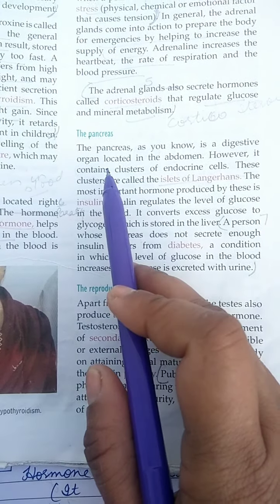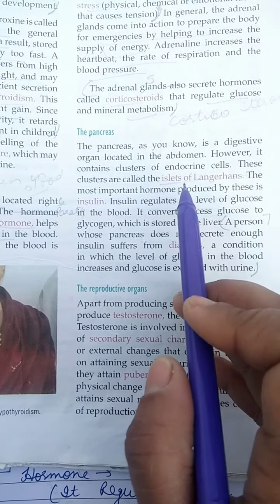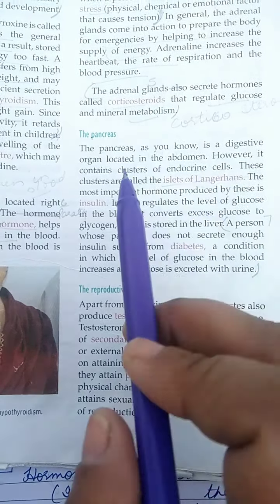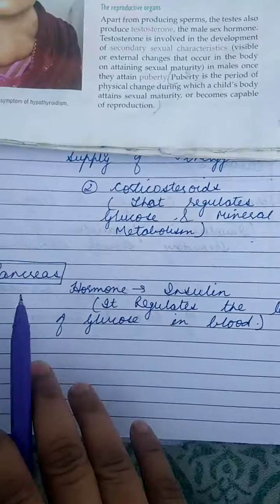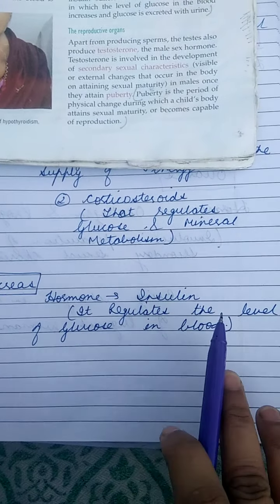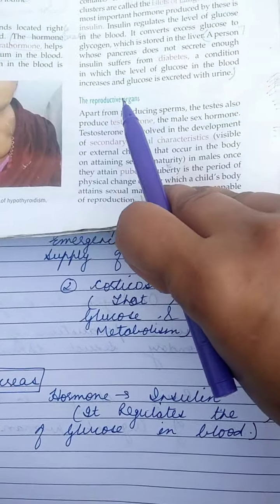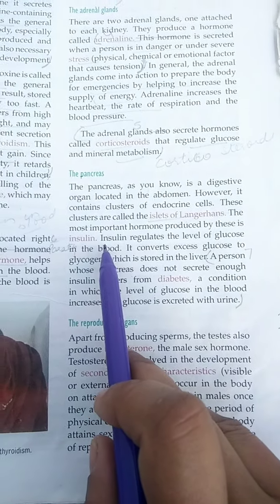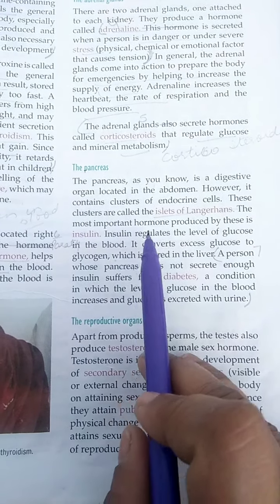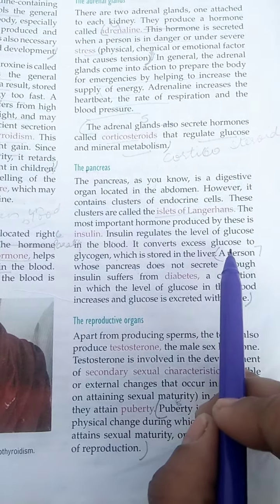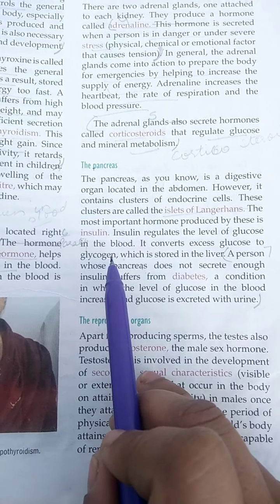The pancreas is a digestive organ located in the abdomen. It has clusters of cells known as the islets of Langerhans, and these clusters secrete the hormone insulin. The function of insulin is that it regulates the level of glucose in the blood. It converts excess glucose into glycogen, and that glycogen is stored in the liver for further use.